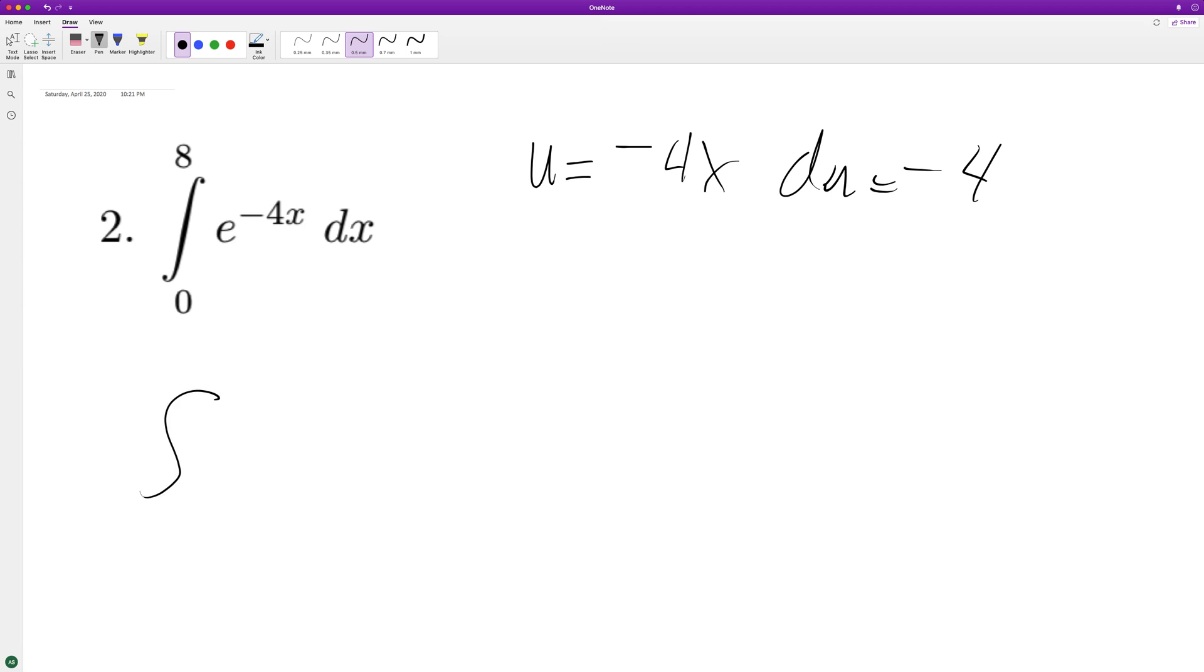When we integrate this, we get, and to get du equal to dx, we need to multiply by negative 1 fourth, because there's only dx here. Negative 1 fourth, 0 to 8, for e raised to u, du, we get, it's just e raised to the negative 4x.